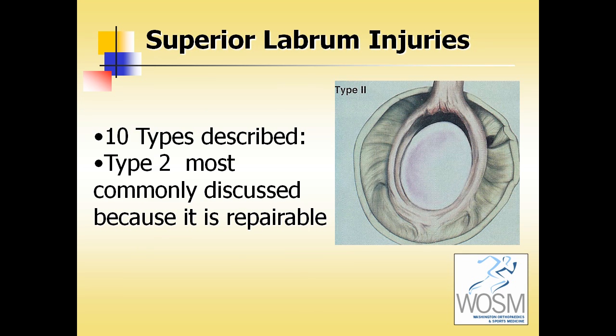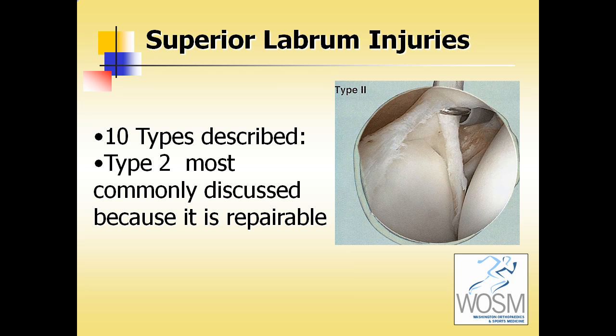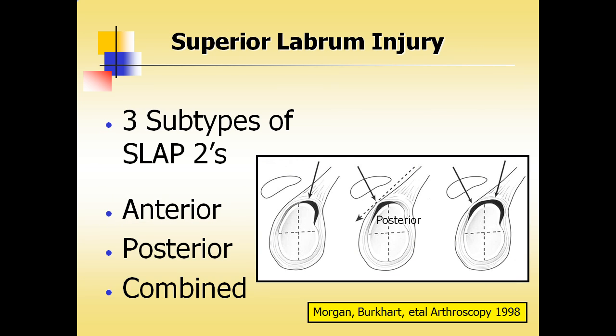There are 10 types described. Type 2 is the most commonly discussed because it is repairable. This is an example of an arthroscopic picture of a type 2. There are three subtypes of SLAP tears relative to the origin of the biceps tendon: anterior, posterior, or combined.